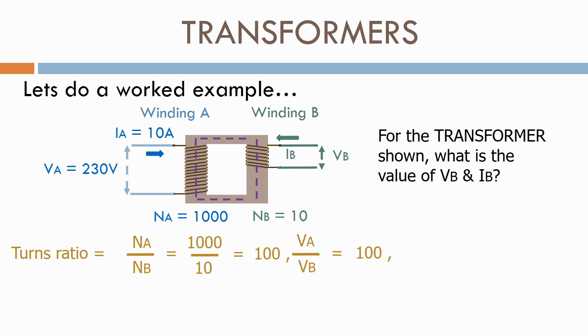Therefore, VA over VB equals the transformer turns ratio equals 100. Therefore, VB equals 230,